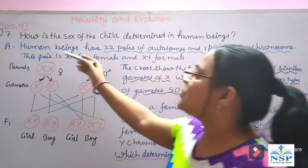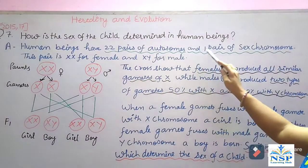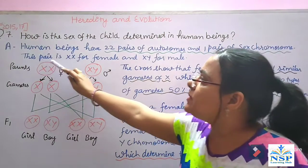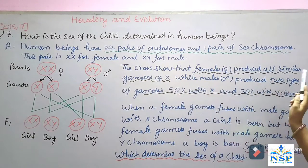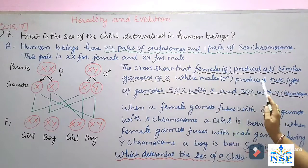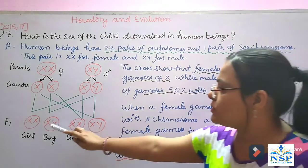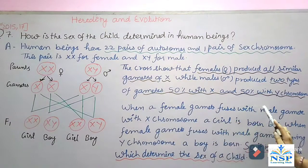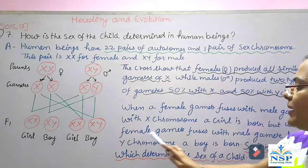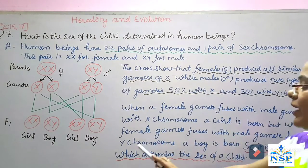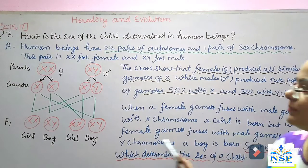Our next question: How is the sex of a child determined in human beings? Human beings have 22 pairs of autosomes and 1 pair of sex chromosomes — XX for female and XY for male. Females produce all similar gametes with X, while males produce two types of gametes: 50% with X and 50% with Y chromosomes. When a female gamete fuses with a male gamete carrying X, a girl is born; with Y, a boy is born. So it is only the male who determines the sex of a child.